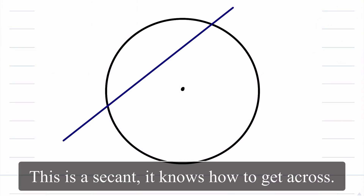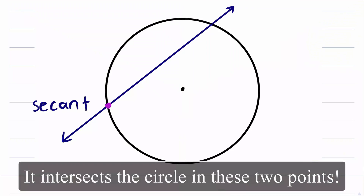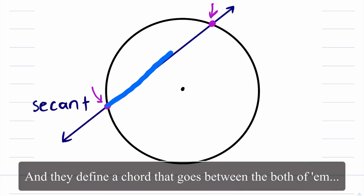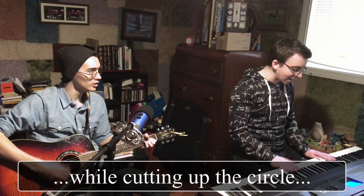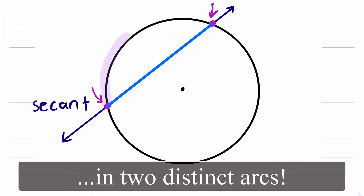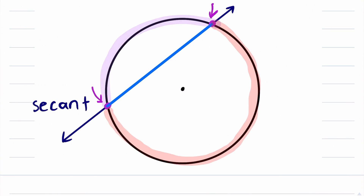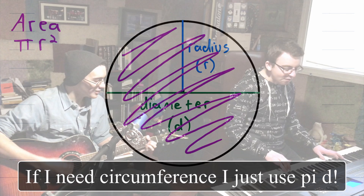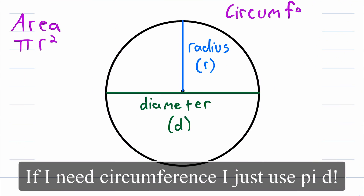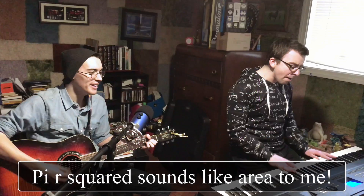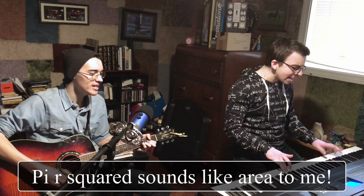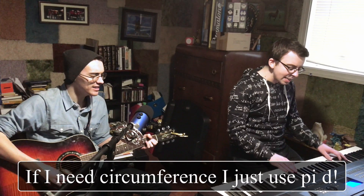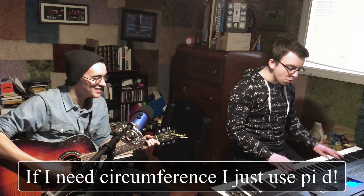This is a secant, it knows how to get across. It intersects the circle in these two points. And it defines a chord that goes between them both, cutting up the circle in two distinct arcs. Pi r squared sounds like area to me. If I need circumference, I'll just use pi d. Pi r squared sounds like area to me. If I need circumference, I'll just use pi d.